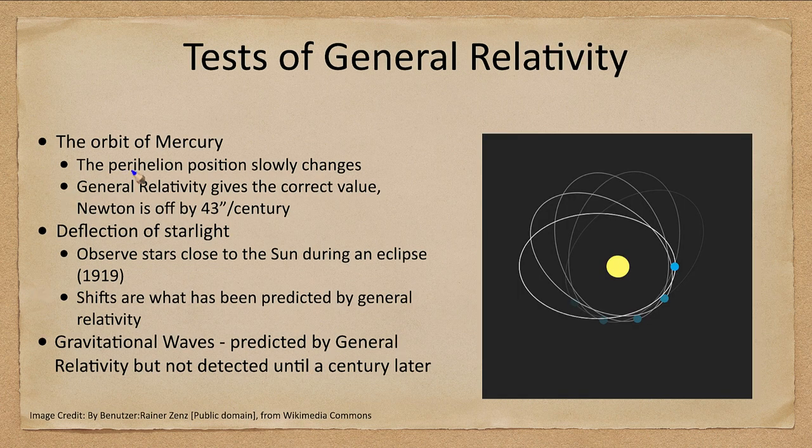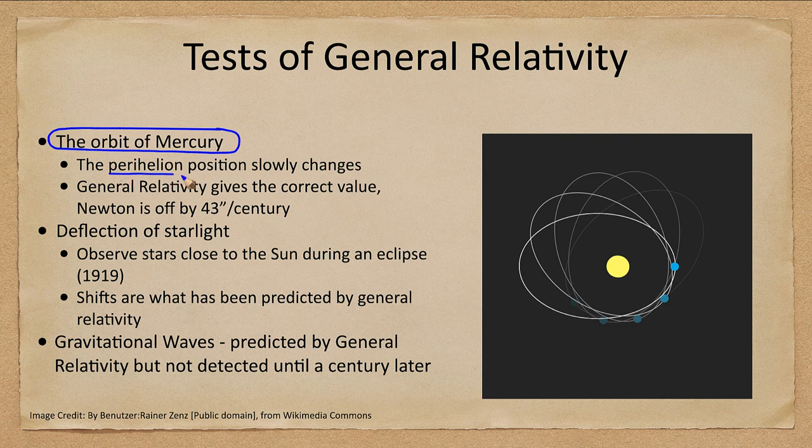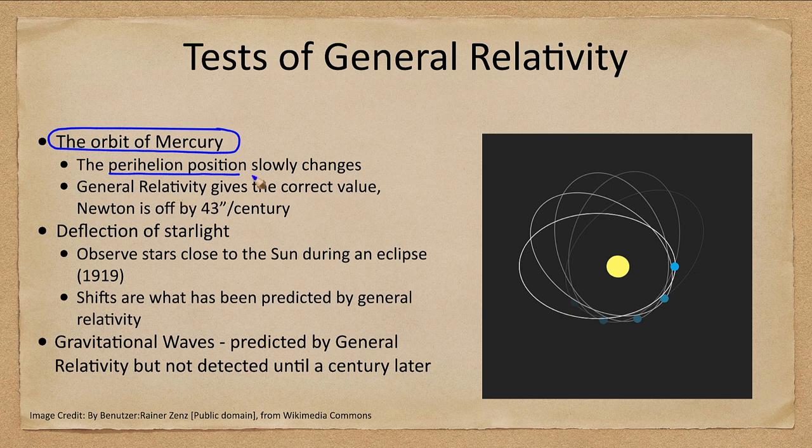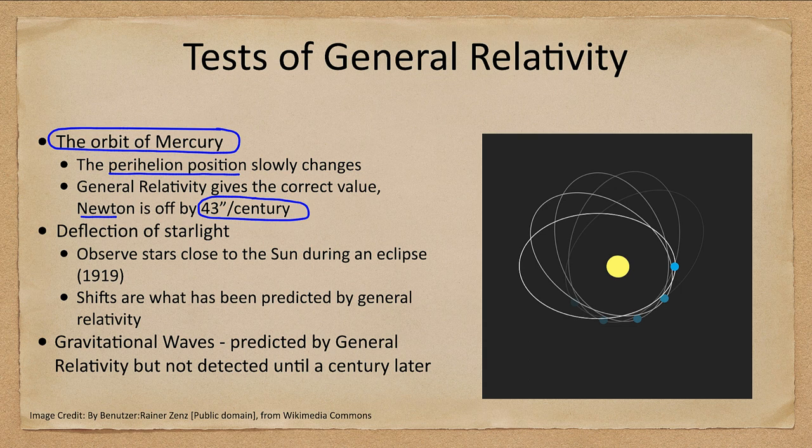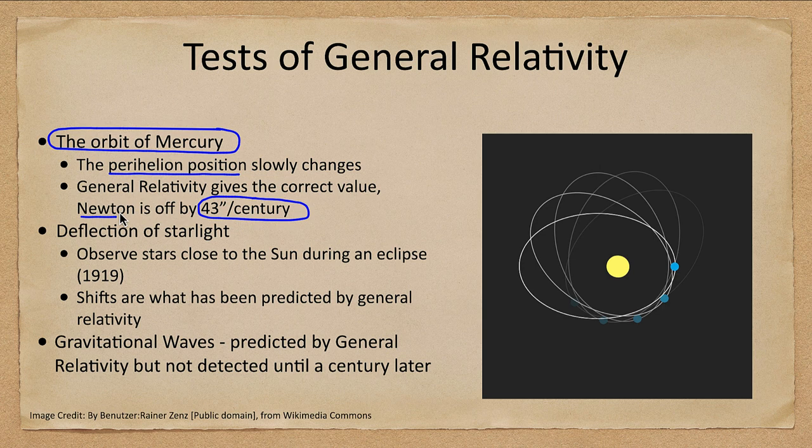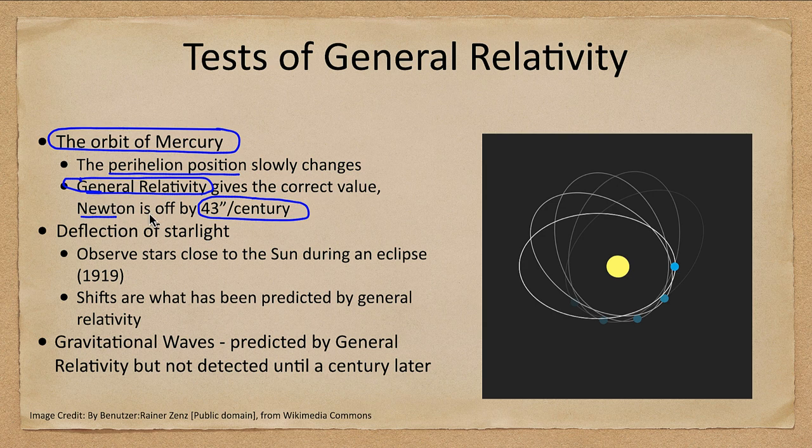Now how can we test general relativity? Well, we have a couple of tests that have been done. One, an early one, was one that we had a problem with before general relativity, and that was the orbit of Mercury. The perihelion position slowly changes. Now that's actually predicted by Newton. However, Newton was off, not by a lot, but by 43 arc seconds per century. That's a very small amount, but it was a measurable amount, and it was consistent. So we knew that there was something wrong with Newton's measurements. Could have been that there was another planet there, but searches for that were unsuccessful. And general relativity, when it came out, was able to explain the orbit of Mercury precisely and explain the exact amount of deviation of its perihelion, closest position to the sun, as it changed.